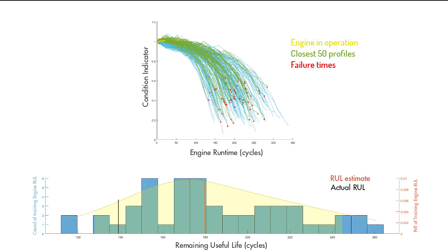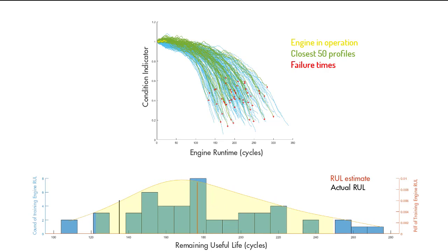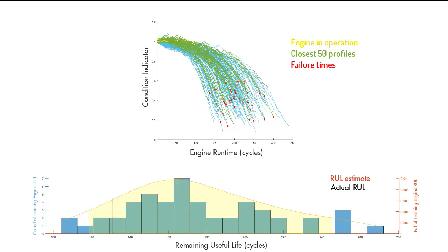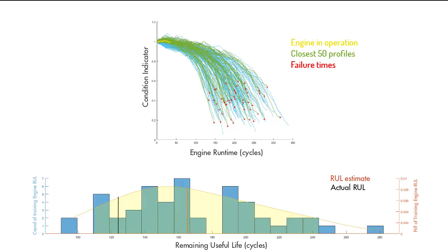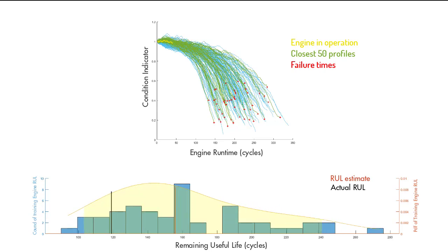And on the upper plot, we see that the closest paths are widely distributed. However, as we get new data from our engine,